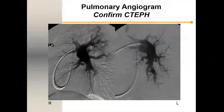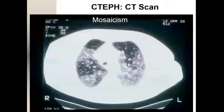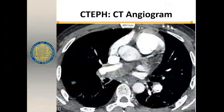She received a VQ scan showing multiple moth-eaten-like perfusion defects with normal ventilation. In our hospital she had a pulmonary angiogram — we use biplane angiography with lateral and AP views. You can see filling defects, webs, abrupt cutoffs, and areas of hypoperfusion. The disease is typically more in the right lung and more in the lower lobes. CT scan of this patient demonstrates mosaicism — areas of hyperperfusion within areas of normal perfusion. CT angiogram can pick up some defects including webs in the pulmonary artery.